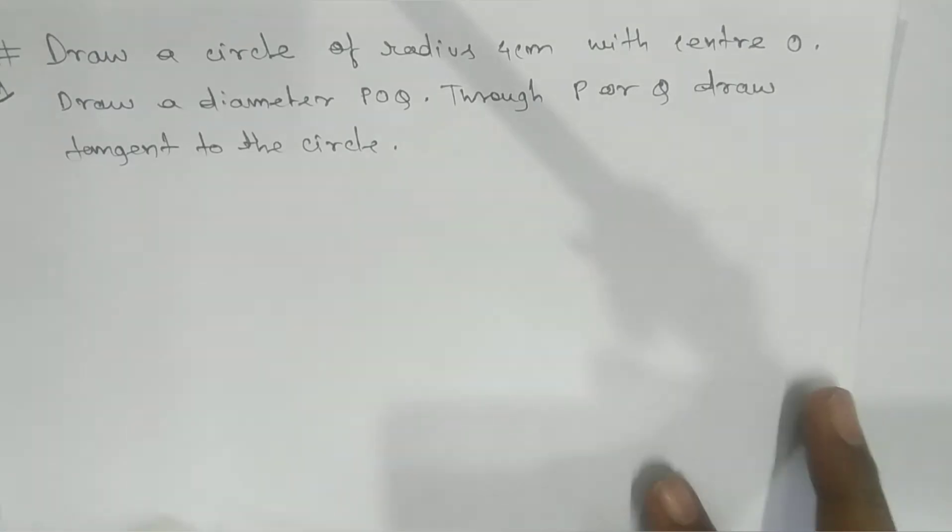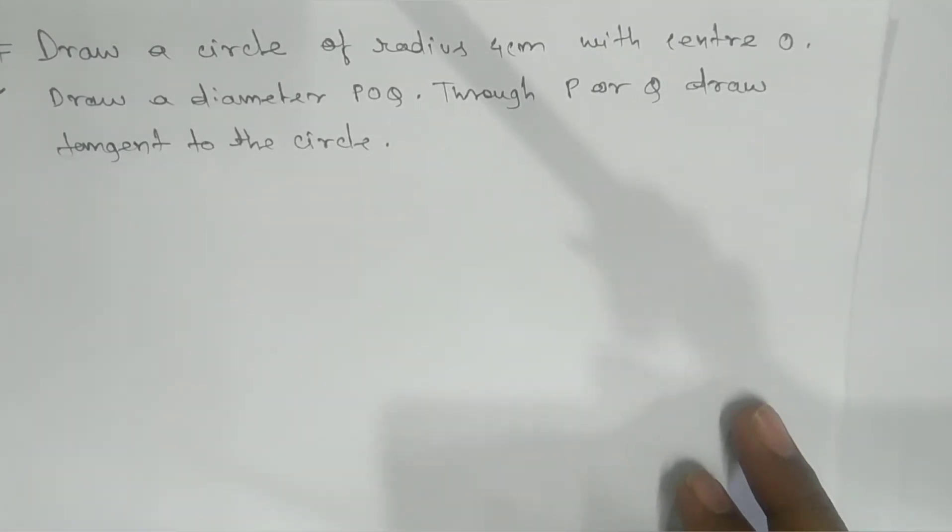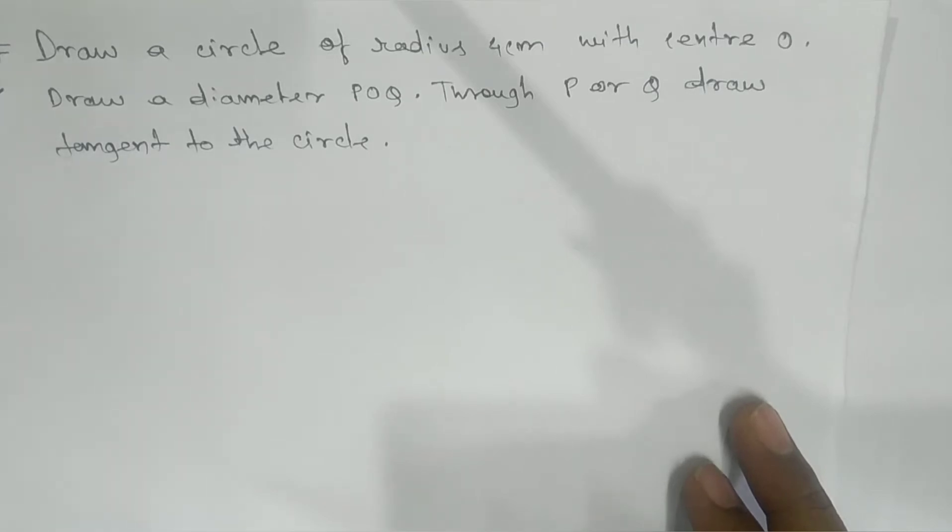Namaste students, here we have the first problem related to construction. Draw a circle of radius 4 cm with center O. Draw a diameter POQ. Through P or Q, draw a tangent to the circle.